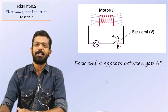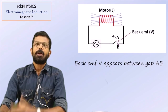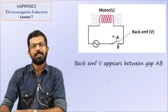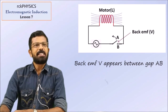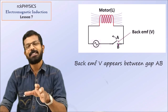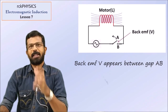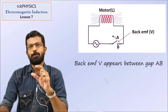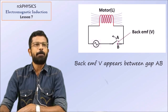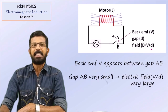Using points A and B — between A and B, a potential difference appears. The potential difference, the back EMF, is V. What is the electric field existing in this gap? Electric field is the gradient of potential, meaning electric field is equal to V divided by distance. The electric field is the value of V divided by D, the gap AB.